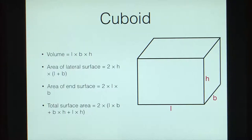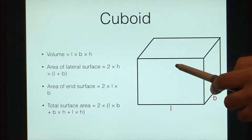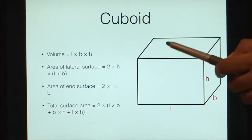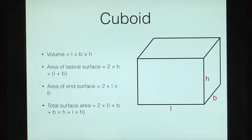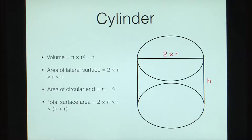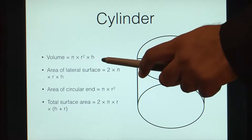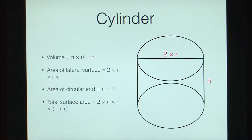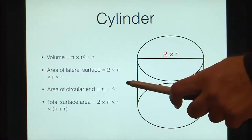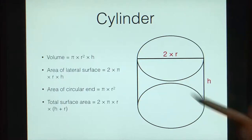For a cuboid, volume is length × breadth × height (LBH). The lateral surface area is the sum of the rectangular lateral faces, and the total surface area is the sum of all faces. For a cylinder, volume is πr²h and the lateral surface area is 2πrh. We used the cylinder volume equation when taking the stem to be of cylindrical shape. The area of the circular end is used to calculate basal areas.